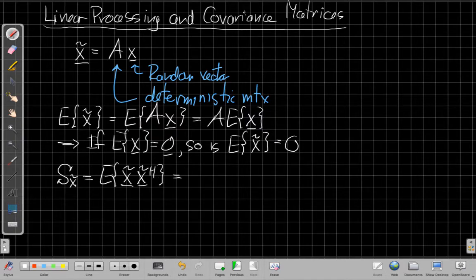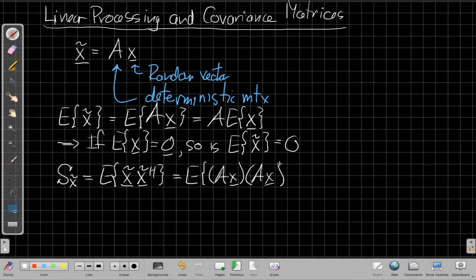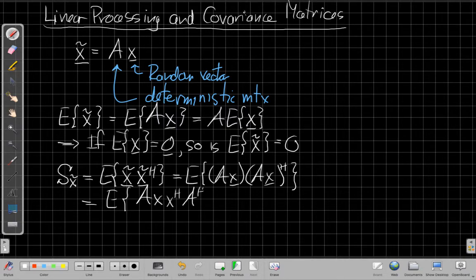And then I plug in the definition for each of those from above. So I have AX times AX Hermitian. If I take the Hermitian of this thing in brackets, I switch the order and conjugate each one. So I get the expected value of A times X times X Hermitian times A Hermitian.